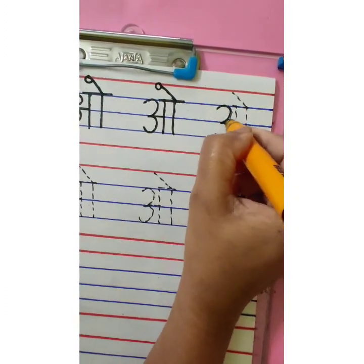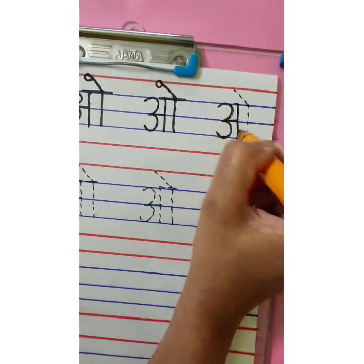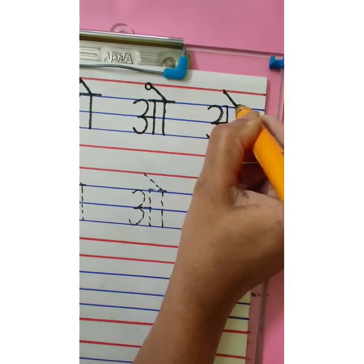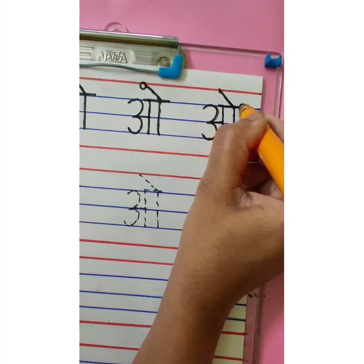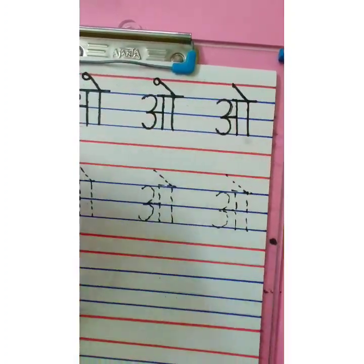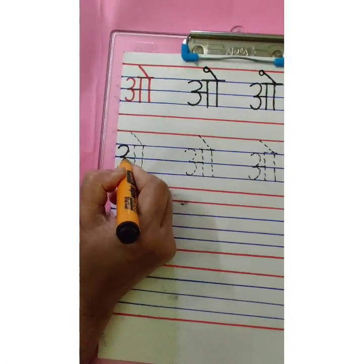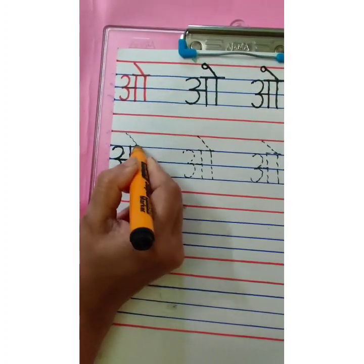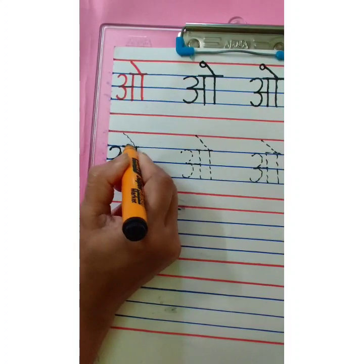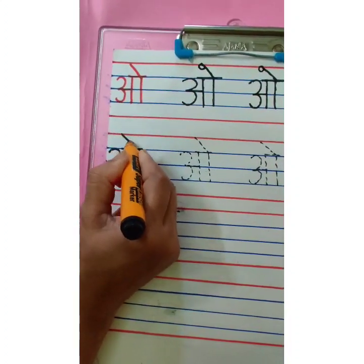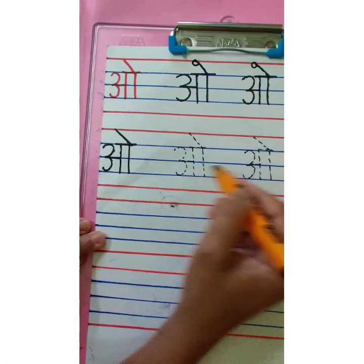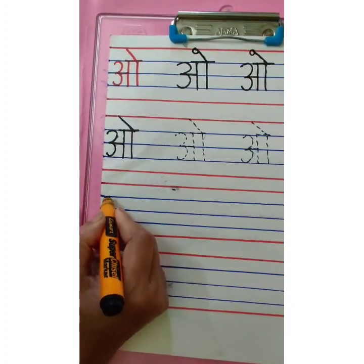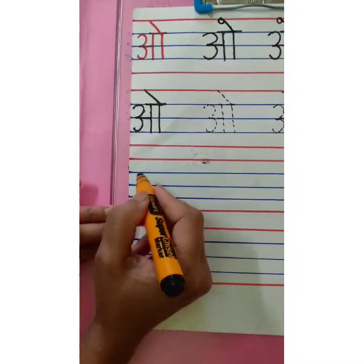Number 3. Sleeping line. Standing line. One more standing line. Overhead small sleeping line. This is O. Number 3. Sleeping line. Standing line. One more standing line. Overhead sleeping line. And matra. O. This way you are going to complete these two rows, and then the remaining rows you are going to write independently.